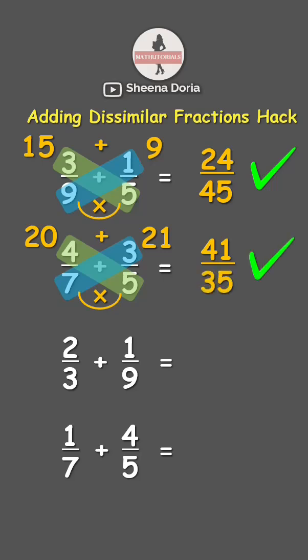Lastly, two thirds plus one ninth. Cross multiply again — two times nine is eighteen, and three times one is three. Then add the numerators: eighteen plus three is twenty-one.